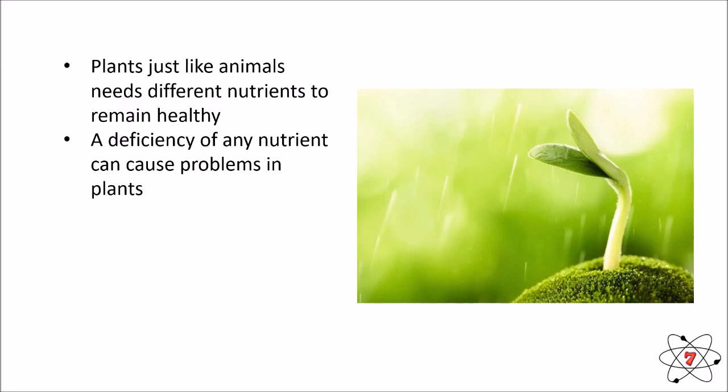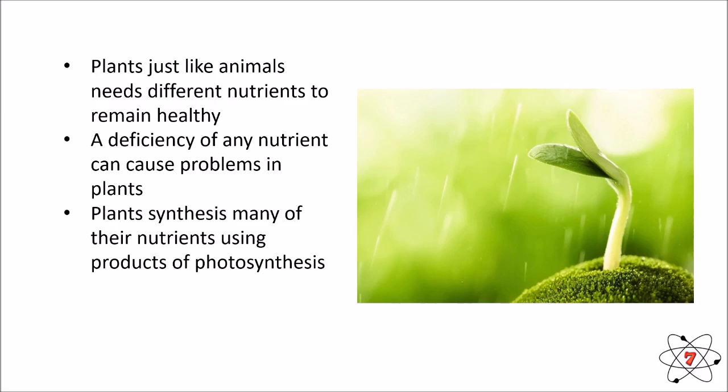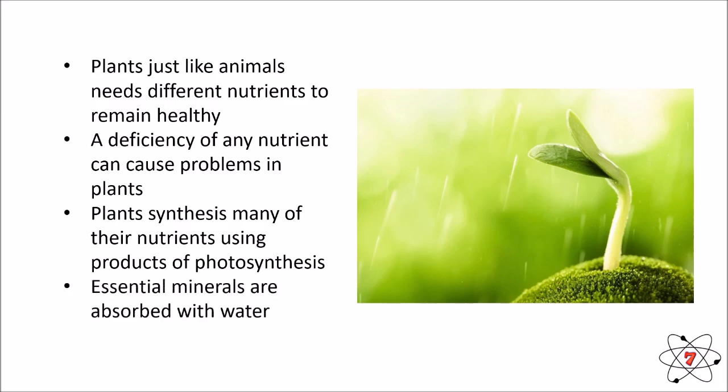Just like in animals, a deficiency in any nutrient can lead to illnesses and other problems. Where plants are different from animals, however, is that plants can make the main nutrient in their diet — glucose — from photosynthesis, and they can then use this glucose to make lots of other nutrients that they require. Animals really don't have the ability to do this.